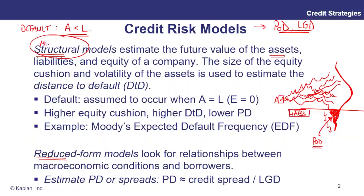You might notice this is very much like a Black-Scholes framework — modeling something as a random process and thinking about where it might end up relative to a fixed strike. It was Merton who pioneered the structural model approach, using a Black-Scholes type random process to model assets versus liabilities and assess the probability of default. We can also think about the volatility of assets and how far we are from defaulting — the equity cushion. The bigger this cushion, the bigger the distance to default, or DTD.